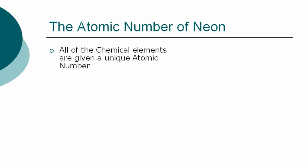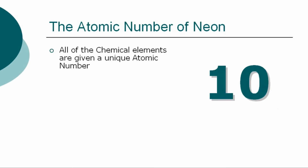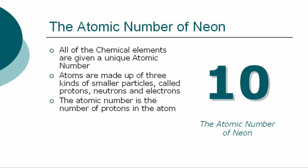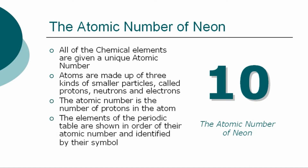All of the chemical elements are given a unique atomic number. The atomic number for neon is 10. Atoms are made up of three kinds of smaller particles, called protons, neutrons, and electrons. The atomic number is the number of protons in the atom. The chemical elements of the periodic table are shown in order of atomic number and identified by their symbol.